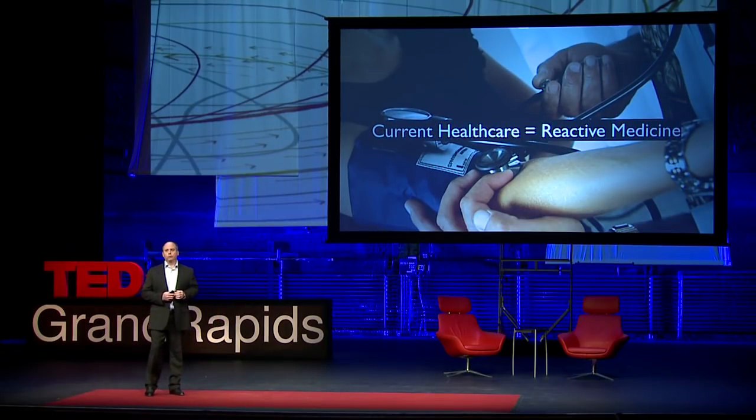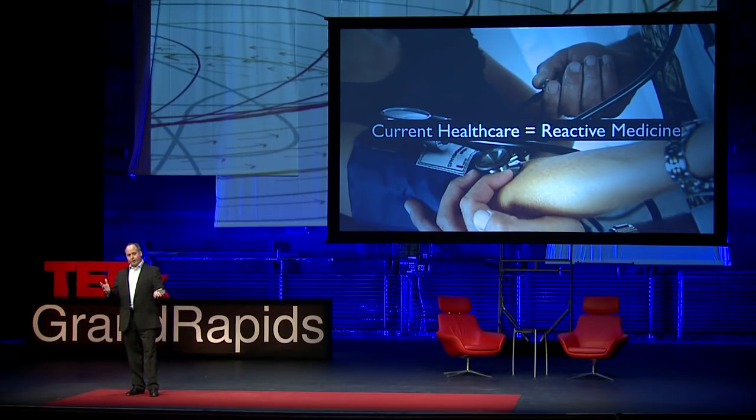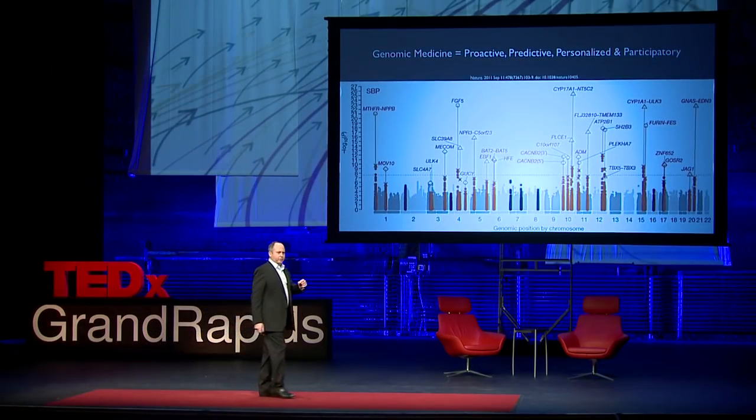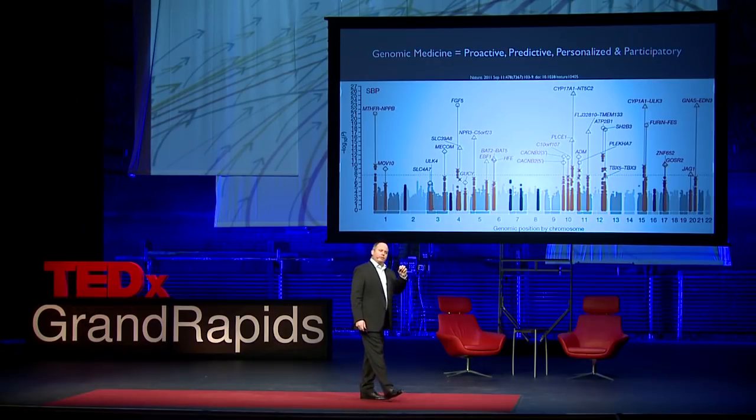When you go to the doctor, one of the first things they do is take your blood pressure. They wrap a balloon around your arm, pump it up full of air, constrict the blood flow, put a stethoscope on your arteries, and listen as they let the air back out for when blood begins to flow back into your arm, then look at a pressure gauge. But that's reactive medicine — they're telling you what you have, whether or not you have high blood pressure, not whether or not you're going to get high blood pressure. Genomic medicine can give you predictive qualities.